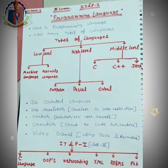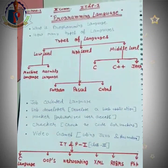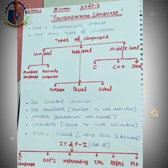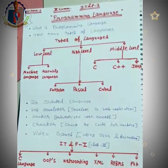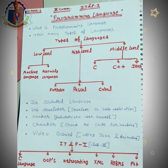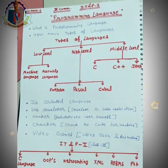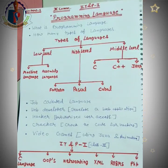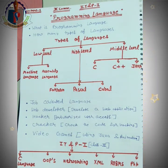Jaise aapko pata hoga, jo bhi application software aap use karte hain — WhatsApp, Instagram, Facebook — ye sab aap apne mobile mein use karte hain jisse life easy ho jaati hai. Online shopping ke liye bhi bahut saare applications hain — e-commerce mein Flipkart, Amazon; food line mein Zomato aur Swiggy. Ye sab application software hain aur is line mein hum ek bahut accha carrier bana sakte hain.